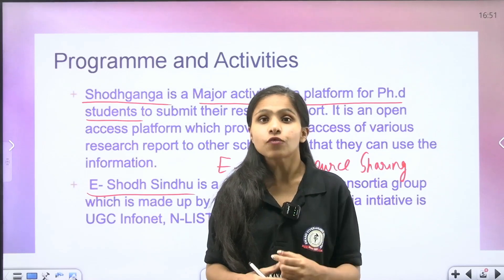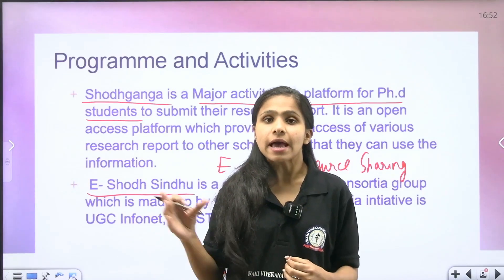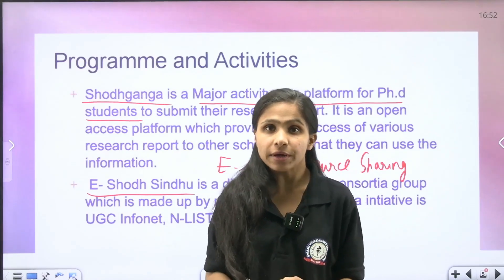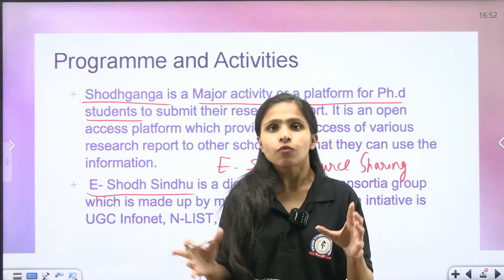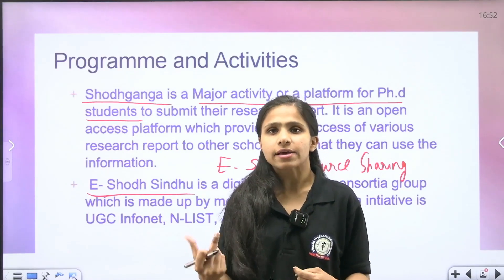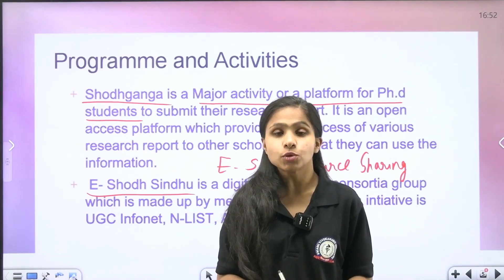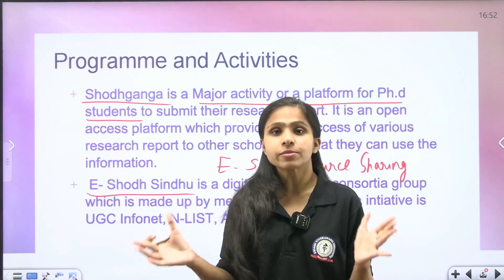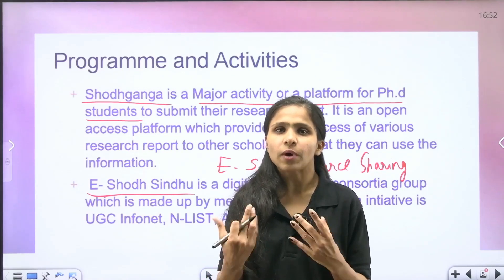For example, FORZA is an astrophysics-related library consortia group which provides information in the astrophysics field. Whatever libraries or institutes are in the astrophysics field, they are created on that library. All of them can share their resources and users can access all resources from there. Similarly, UGC InfoNet is also a library consortia where all universities and colleges share their resources so that users can easily access them.